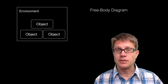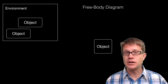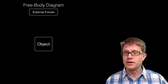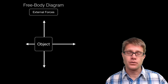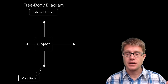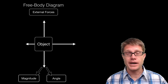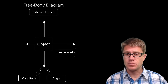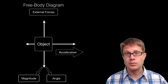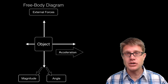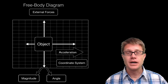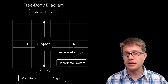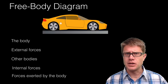In a free body diagram, you are taking an object and removing it from its environment, then labeling all of the external forces acting on it. Each arrow represents both the magnitude and direction of the force acting on the object. If you look at it, the vector sum here is going to be to the right, so acceleration is going to be to the right. You will save yourself huge headaches if you always set up your coordinate system so that one axis is parallel to the acceleration of the object.